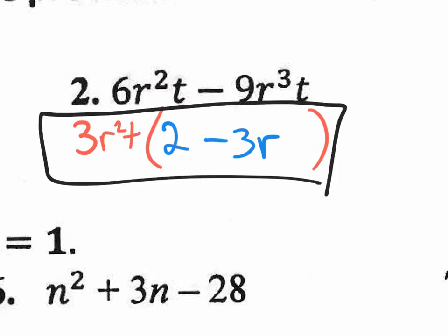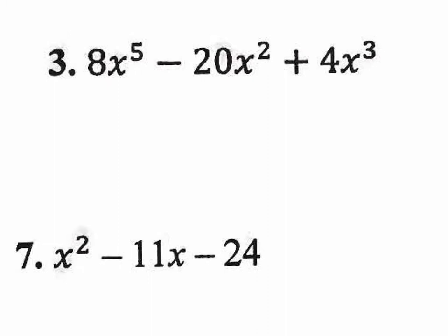Let's move on to number 3 — three terms, a little bit harder, no problem. Let's look at the coefficients: 8, 20, and 4. What's the common factor? The number 4. We also have 5 x's here, 2 x's here, and 3 x's here. So let's pull out the greatest amount of x's we could pull out from all terms at the same time, and that would be x². So 4x² is our GCF.